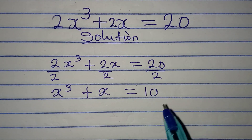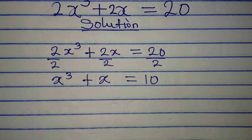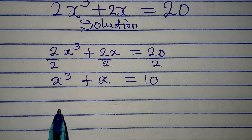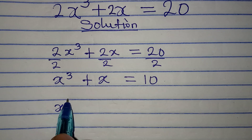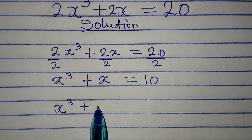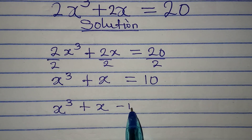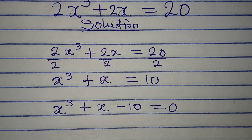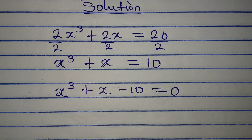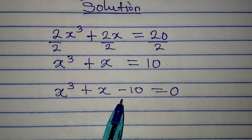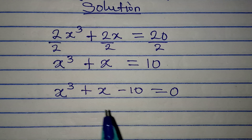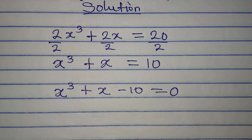This will be equal to 10. Now what do we do? Bring everything to the left-hand side, so we have x³ + x - 10 = 0. The way it is, we cannot factorize this because we don't have an even number of terms — 1, 2, 3. So we can't factorize it directly.